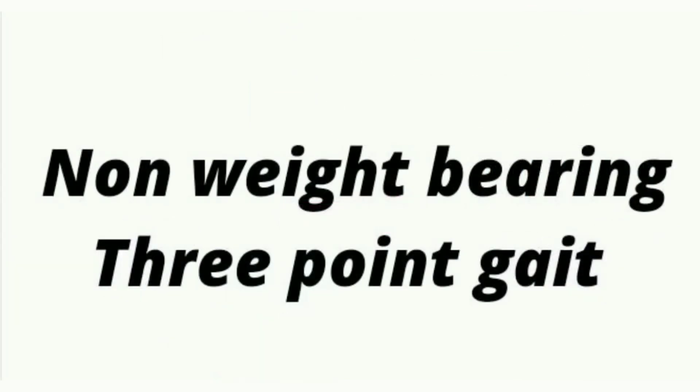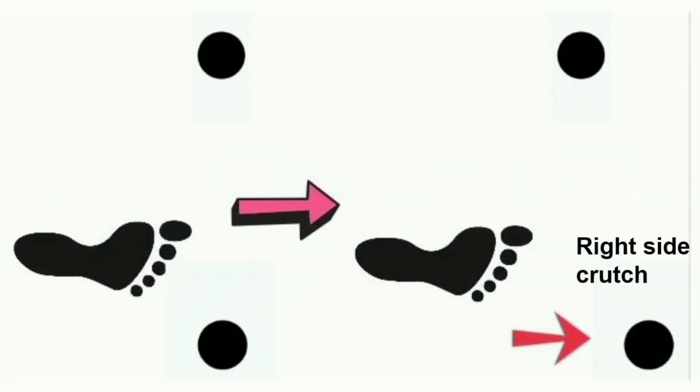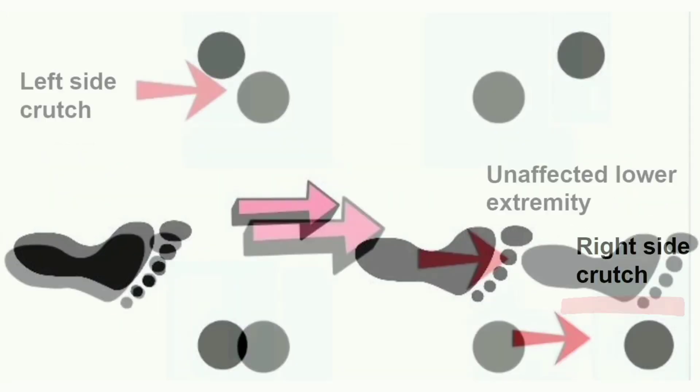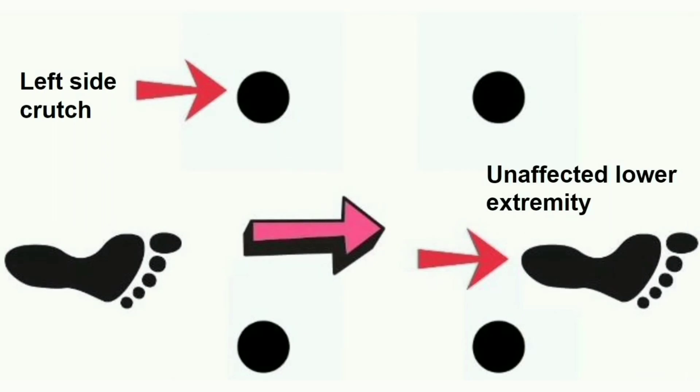In non-weight bearing three point gait, the first point is the unaffected side crutch, the second point is the affected side crutch, and the third point is the unaffected lower extremity.